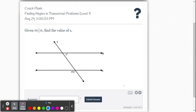This video is going to provide a few examples for finding angles in transversal problems level one within the Delta Math online system. So we're given parallel lines. Line M is parallel to line N. It says find the value of X.